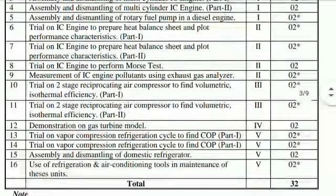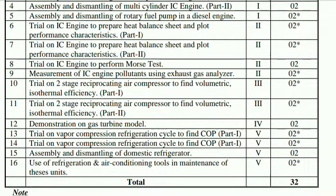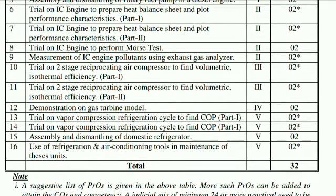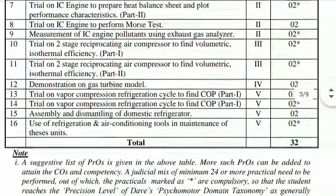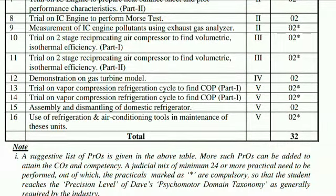The sixth practical is a trial on IC engine to prepare a heat balance sheet and plot performance characteristics, parts 1 and 2. The eighth practical is a trial on IC engine to perform more tests. The ninth practical is measurement of IC engine pollutants using an exhaust gas analyzer. The tenth is a trial on a two-stage reciprocating air compressor to find volumetric efficiency, parts 1 and 2. The twelfth is a demonstration on a gas turbine model. The thirteenth is the vapor compression cycle parts 1 and 2.